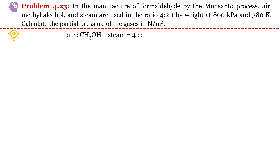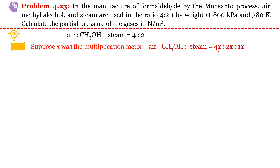We don't know the multiplication factor needed to get the initial weight values. So we assume x is the multiplication factor and rewrite the weight ratio multiplied by x. We can say 4x is the weight of air, 2x is the weight of CH₃OH, and 1x is the weight of steam.